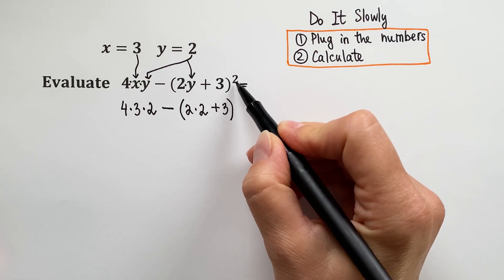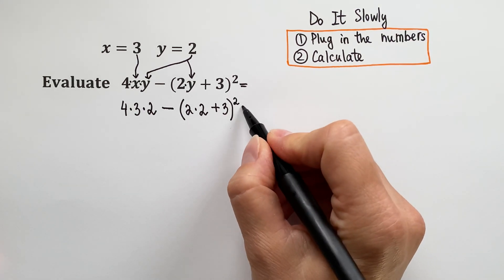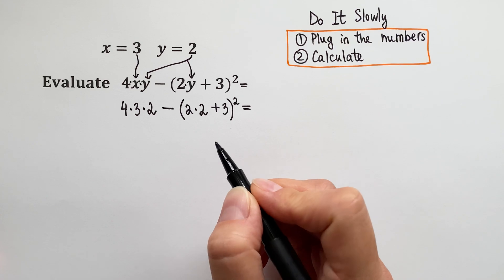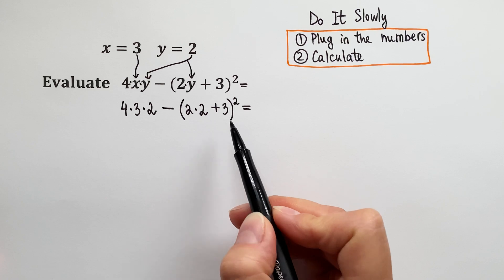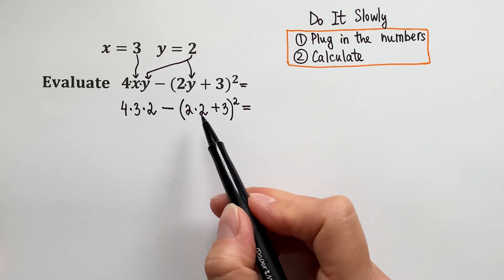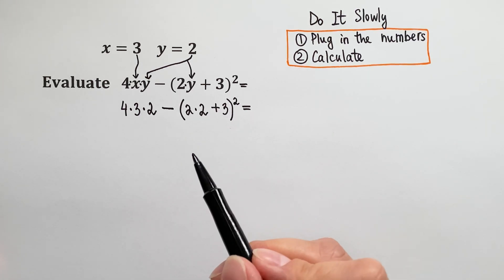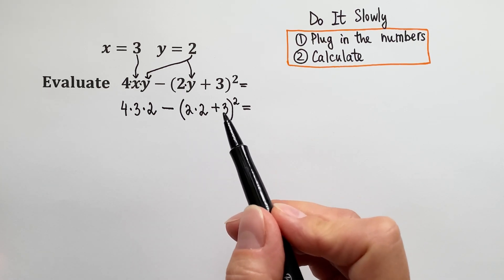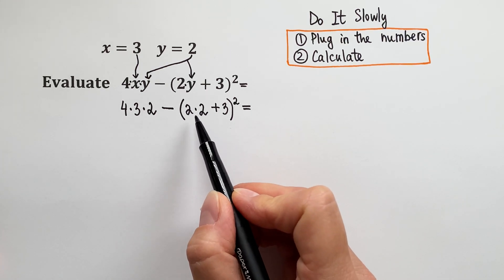Remember we have the power here, so make sure you put the power over the parenthesis. Next we are going to calculate according to the order of operations. What operations do we see? We see multiplication, subtraction, and parenthesis. Inside the parenthesis we have multiplication, addition, and this whole thing is raised to the second power. So what do we do first? First we must do what's inside the parenthesis. Inside the parenthesis we have multiplication and addition, so first we will do multiplication inside the parenthesis.